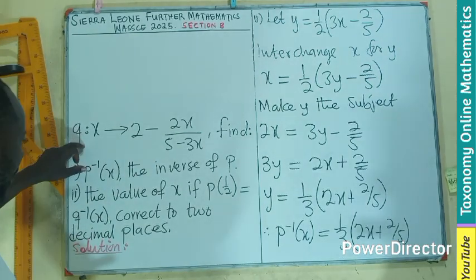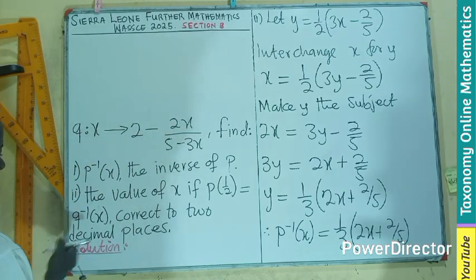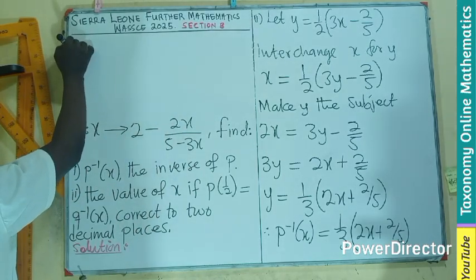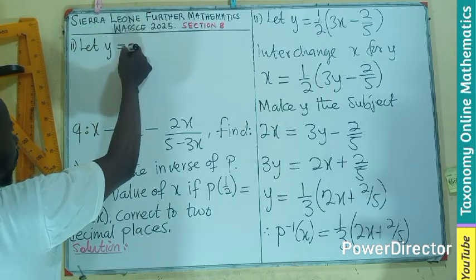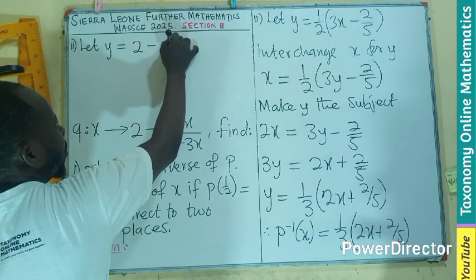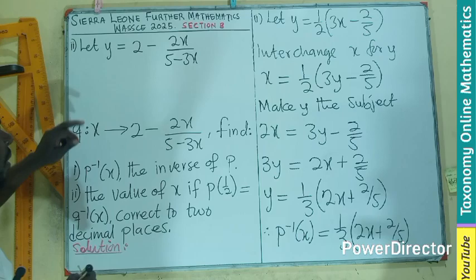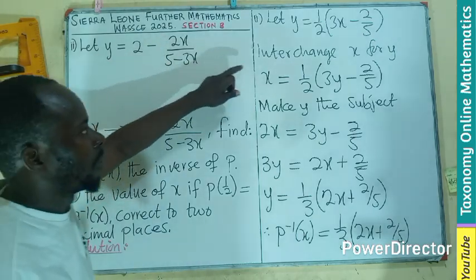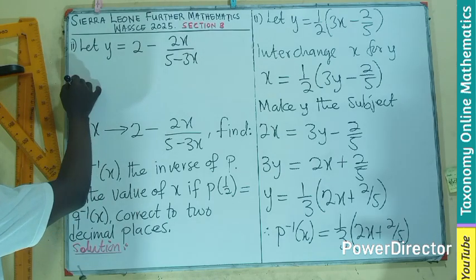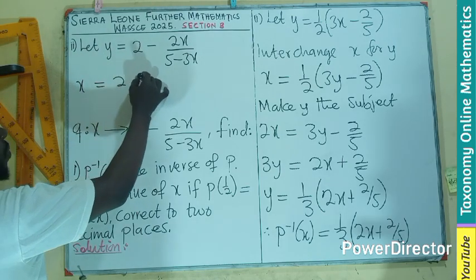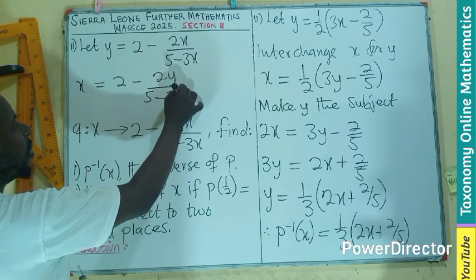Then we can equate the two together. So before I clean the Q, instead of finding this first, let me find this first so that I can clean this one. Let Y also equals to two minus two X all divided by five minus three X. This is the Y equals to this. Interchange the position. I am going to continue without writing it. That means I have X equals to two minus two Y over five minus three Y.